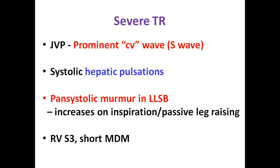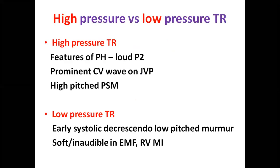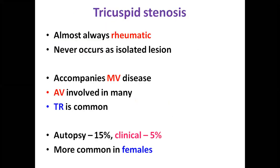High-pressure TR has features of pulmonary hypertension with prominent V wave and high-pitched pansystolic murmur. Low-pressure TR has less prominent JVP and hepatic pulsations, and the murmur is early systolic, decrescendo, and more often low-pitched. It may even be soft or inaudible in endomyocardial fibrosis or right-sided MI. Tricuspid stenosis is almost always rheumatic, accompanied by mitral valve disease, sometimes aortic valve disease. Clinical TS is seen in about 5 percent of patients, more prominent in females.